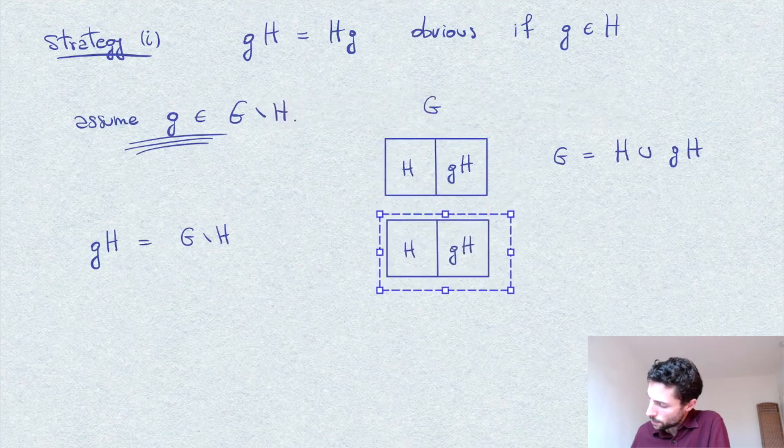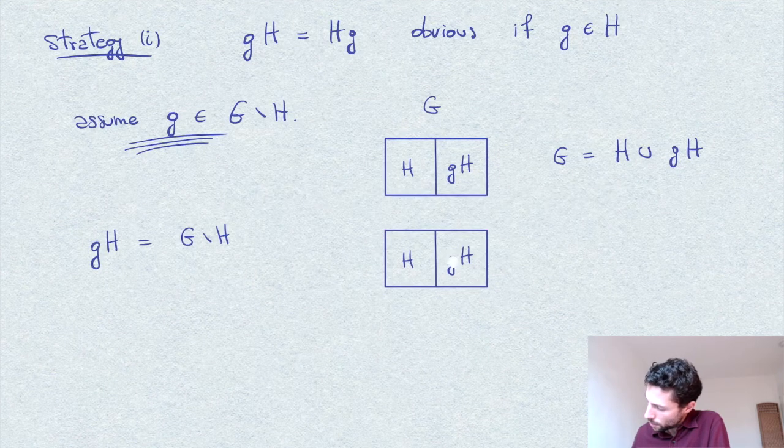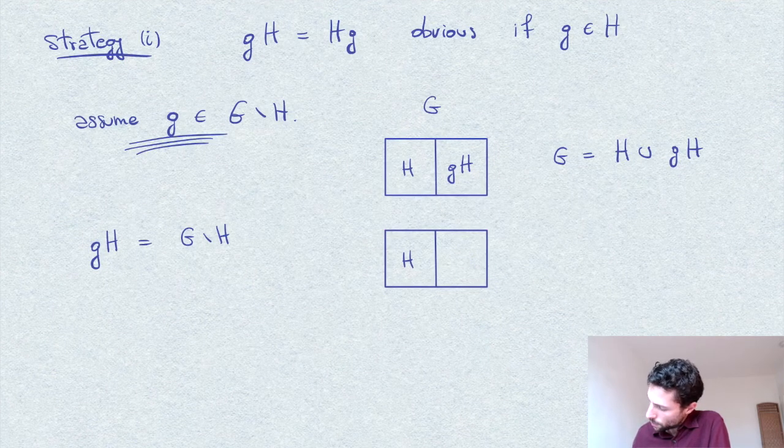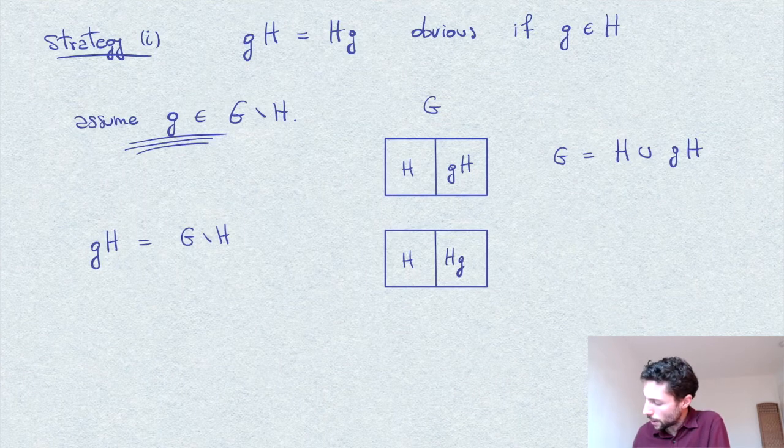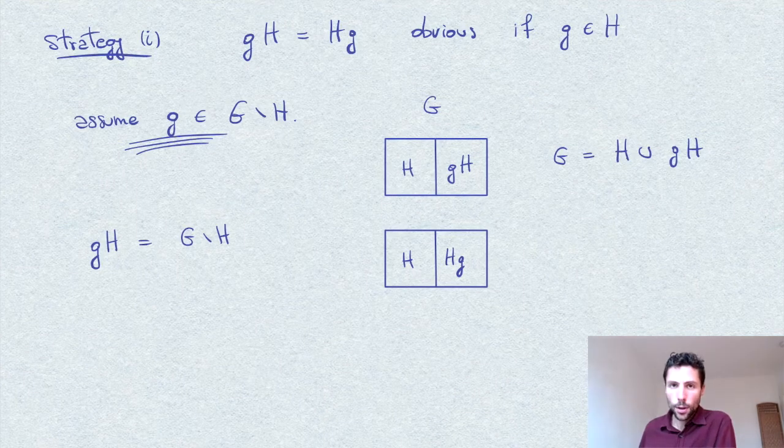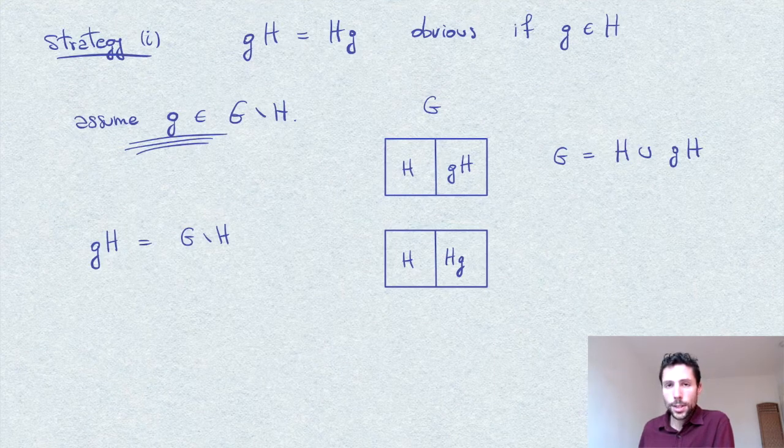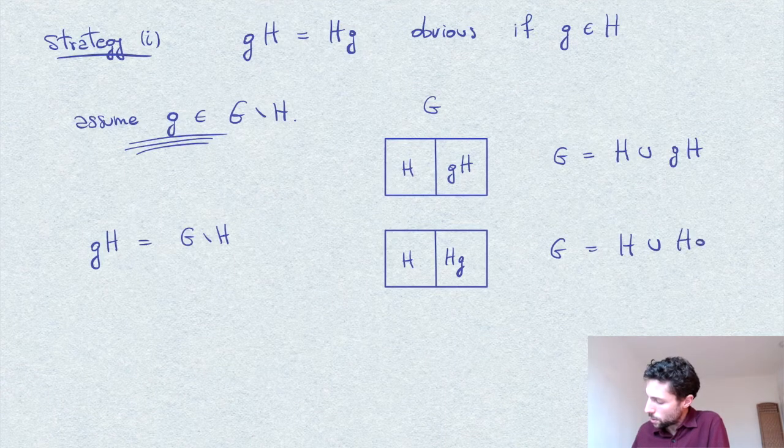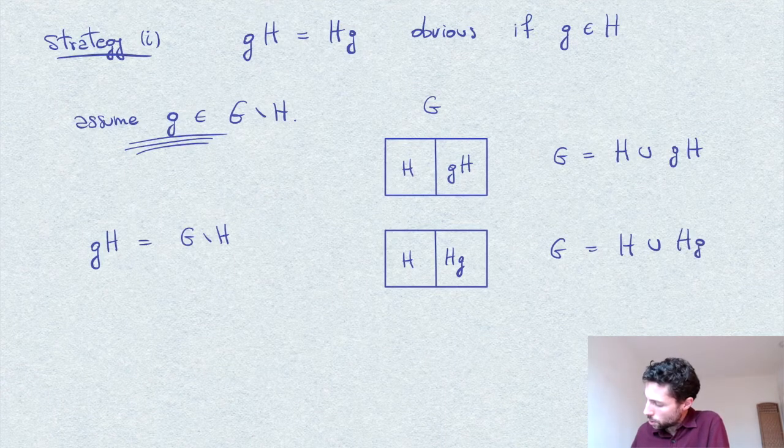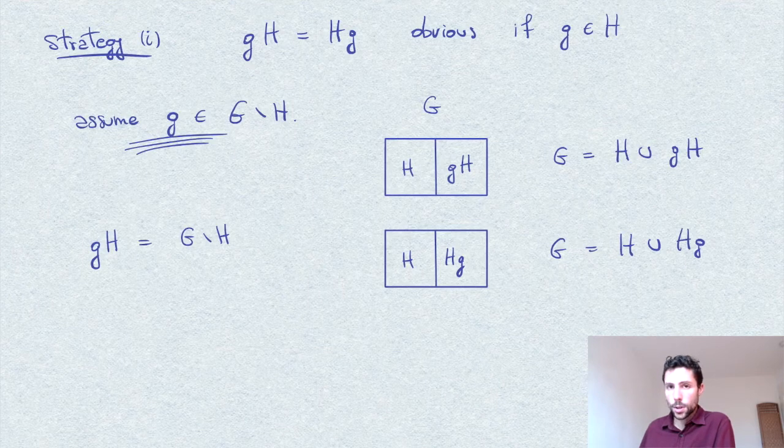Of course, we can repeat the same argument now with right cosets. Replacing this gH with the right Hg coset of H, we also have the same situation for g not in H. So G is equal to H times Hg as coset subdivision.